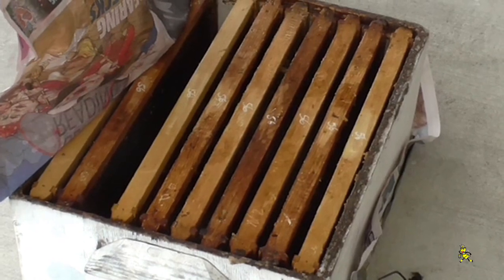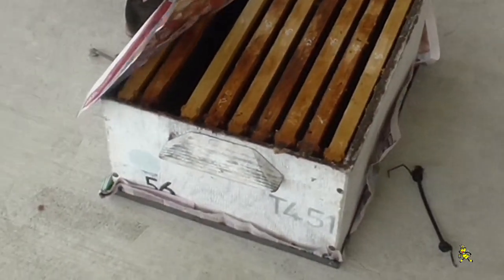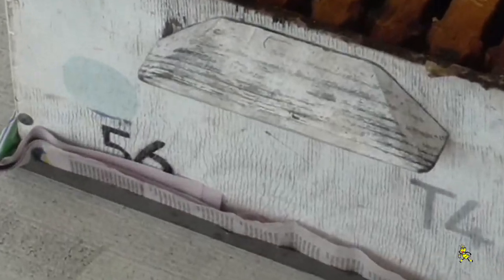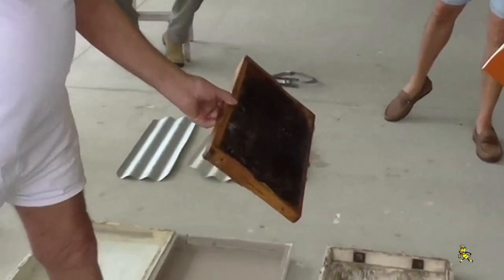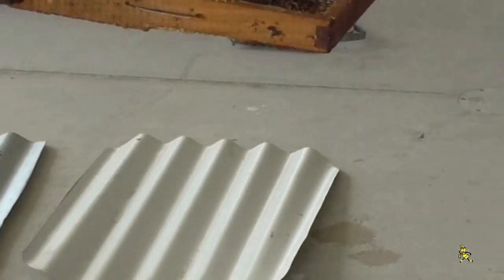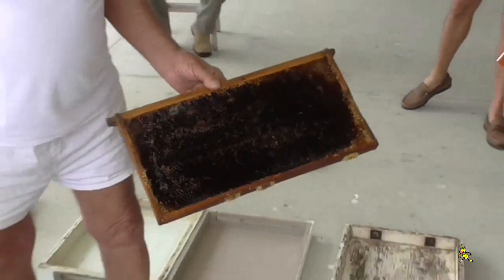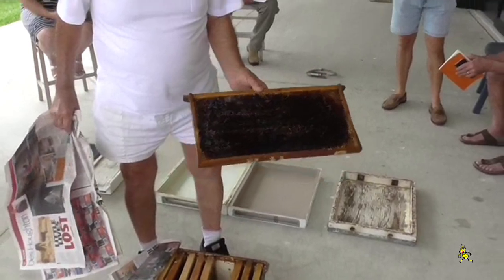I've been using the barrier system for over 30 years. If supers are not irradiated, there is a lot of extra work required to check small hive beetle larvae and wax moth grubs every seven days before they're put back on the hives.